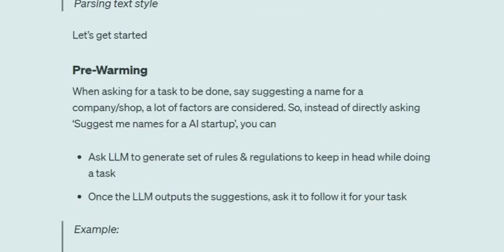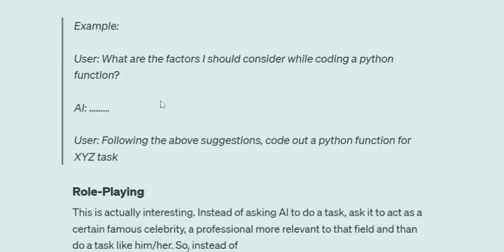The first one is pre-warming. Whenever you ask an LLM to do a task, you should try to give it all the possible rules and regulations it should follow, along with all the details you can provide. But most of the time you won't have all of that, so in that case ask the LLM to generate a set of rules and regulations it should keep in mind while doing the task. Once the LLM outputs its suggestions, ask it to follow them for your task. For example: 'What are the factors I should consider when coding a Python function?' Then: 'Following the above suggestions, code out a Python function for XYZ task.' This way, all the details required for the task are with the LLM, giving it a more detailed prompt.